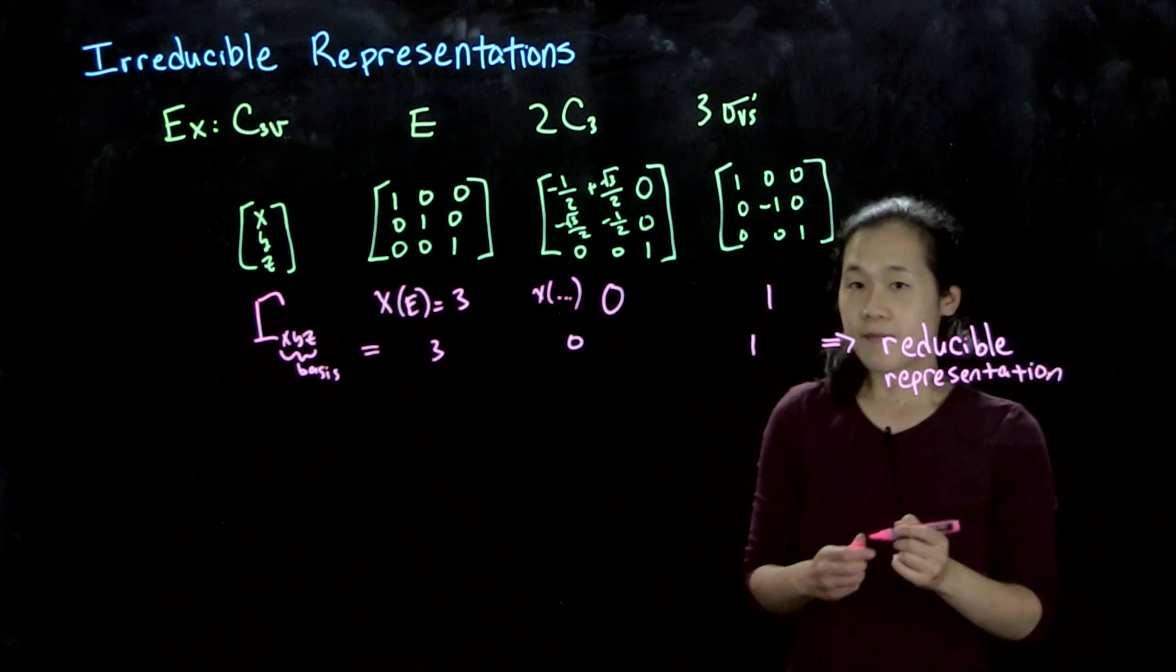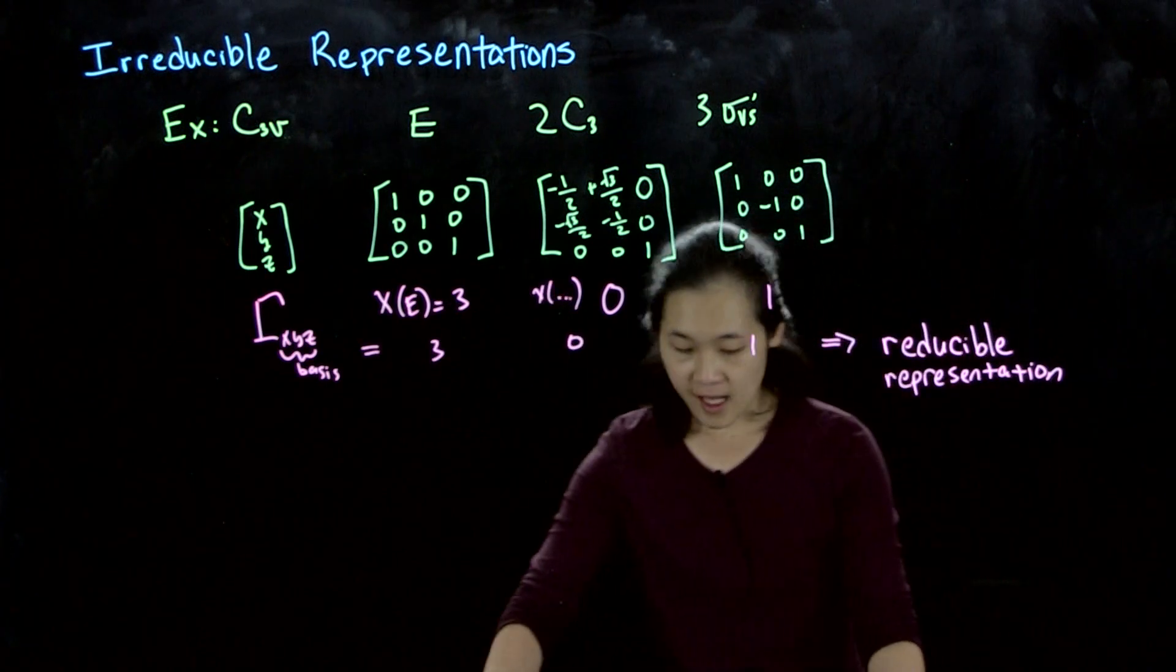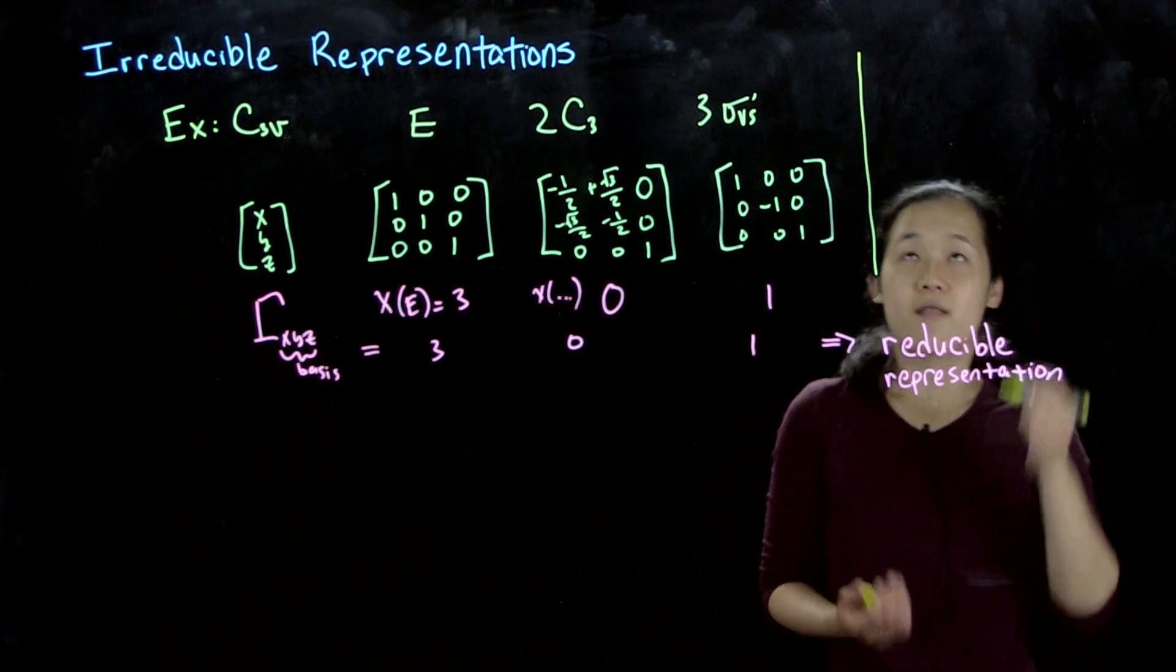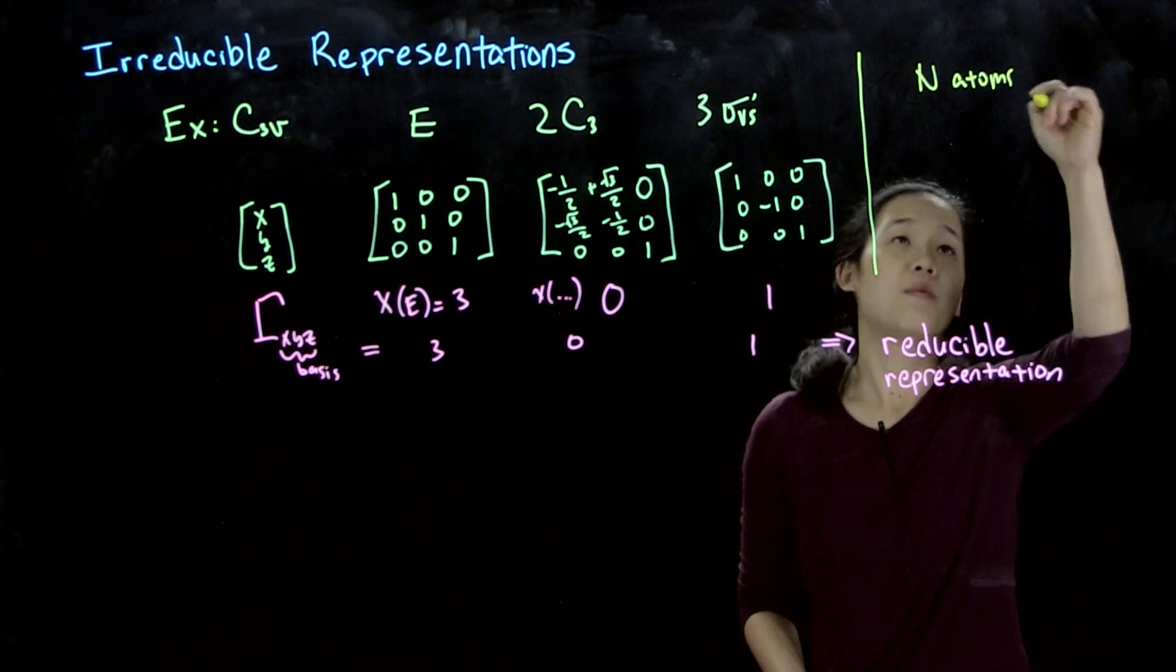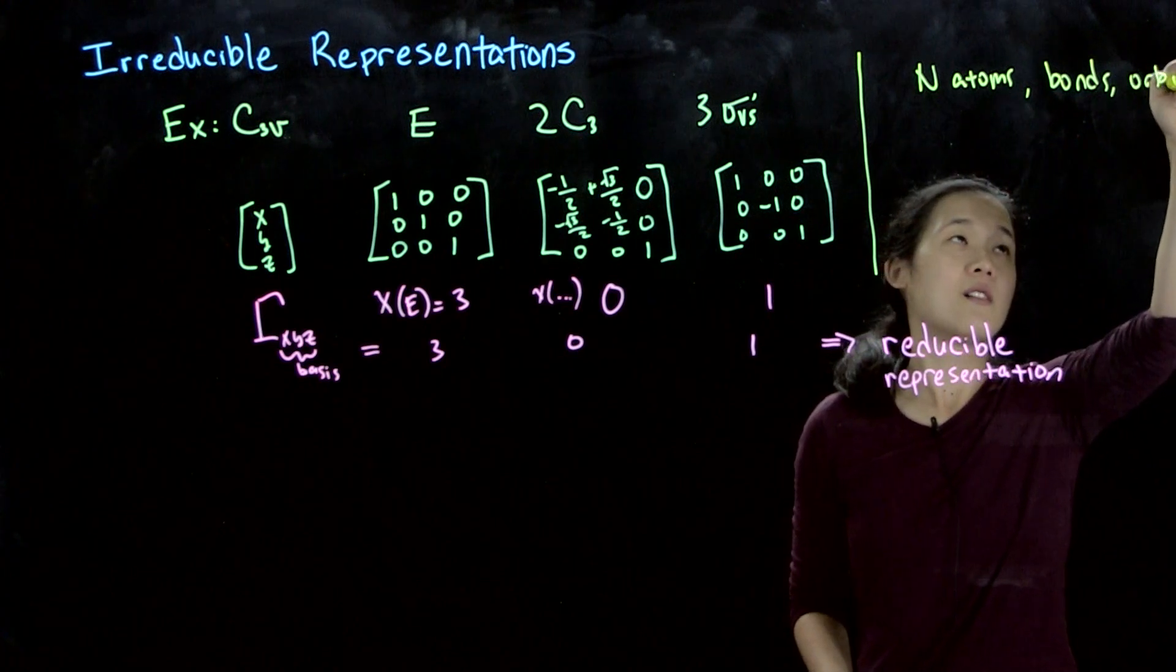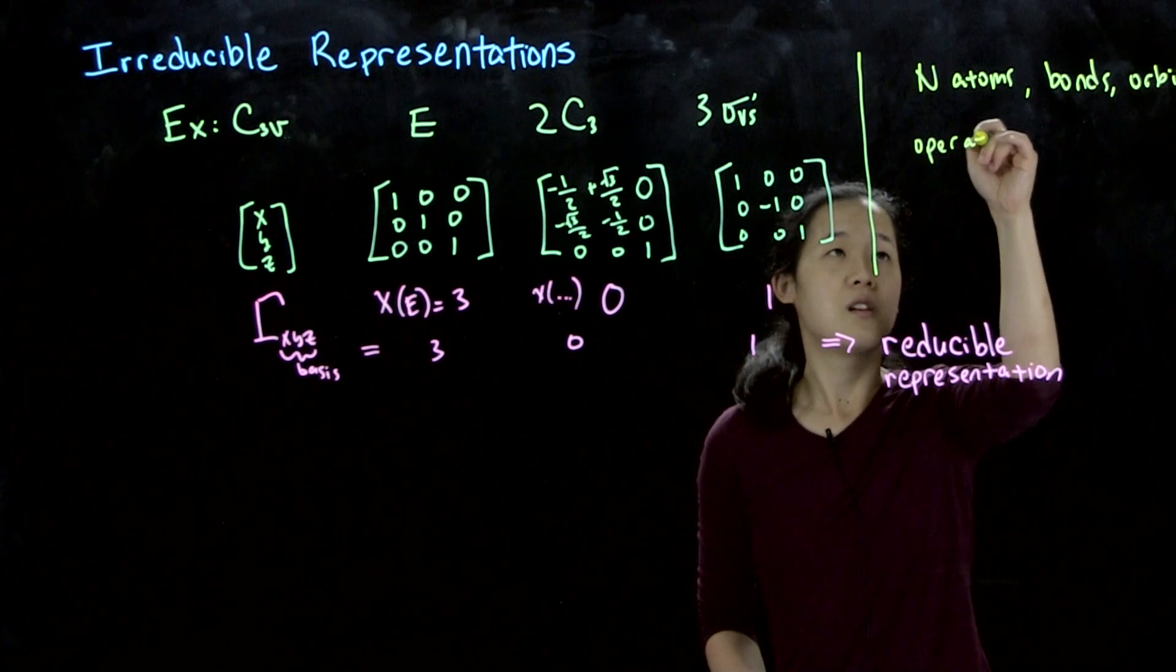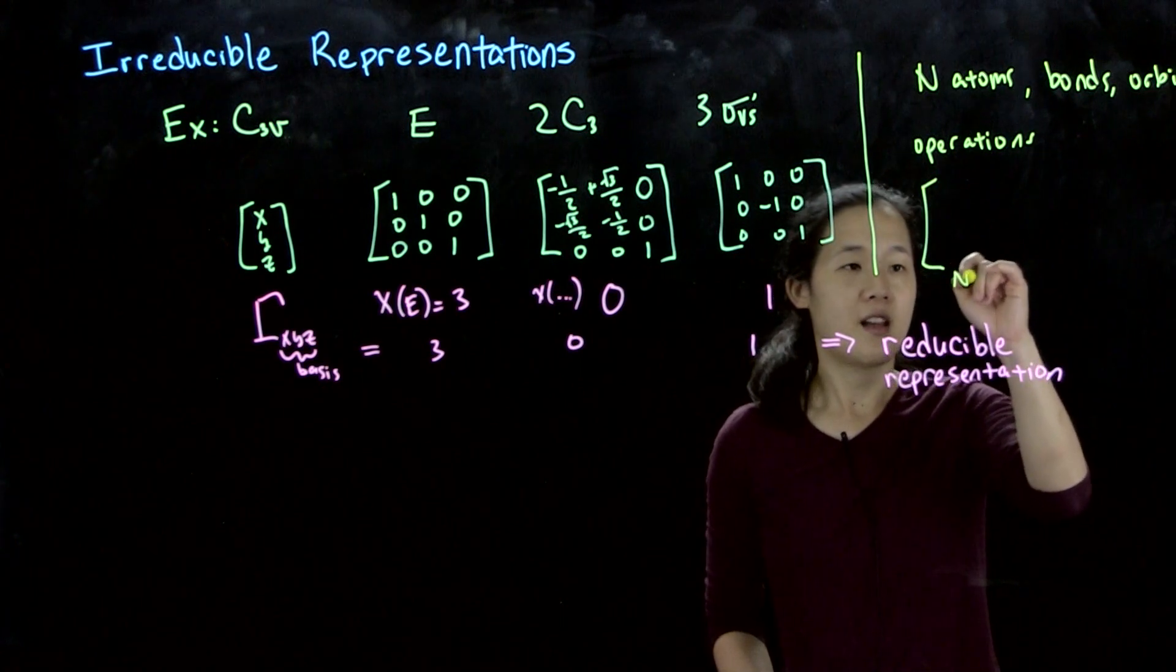The point is, if you have for any basis set—your basis could be anything, right? N atoms, often atoms, bonds, orbitals, etc. So basically, all your operations will end up being n by n matrices.